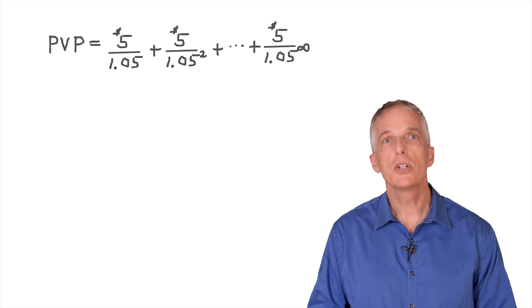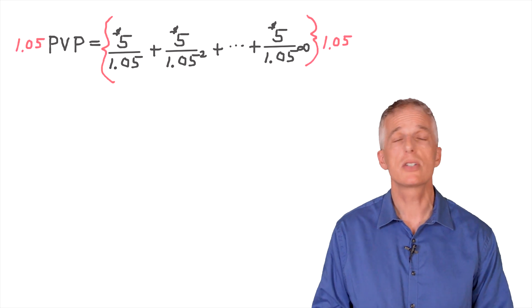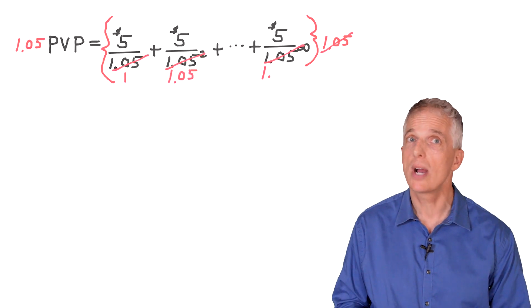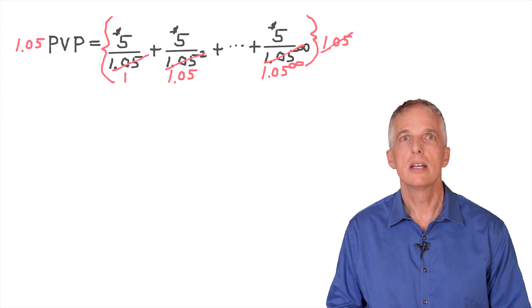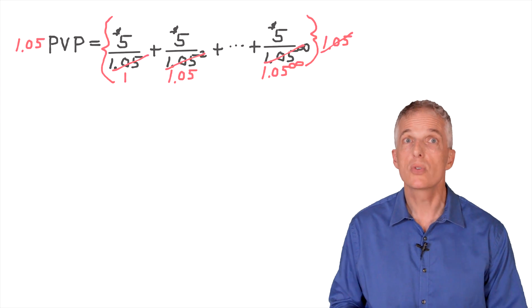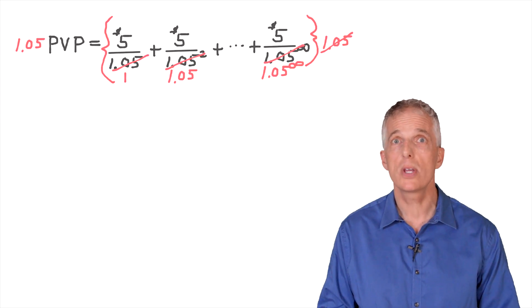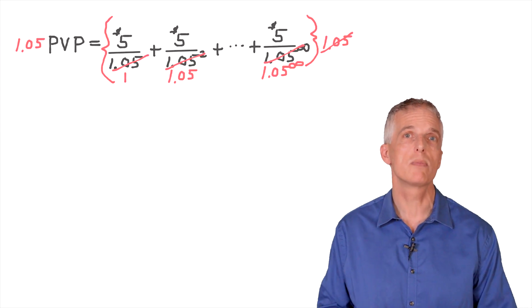There's a clever trick that we can use to solve the problem mathematically. Let's start with the infinite sum. I can multiply both sides of this equation by 1.05, or 1 plus the 5% interest rate. Notice how things cancel on the right-hand side of the equation? For each $5 payment, the discounting is reduced by one year — the exponent associated with 1.05 in the denominator of each term is reduced by one.